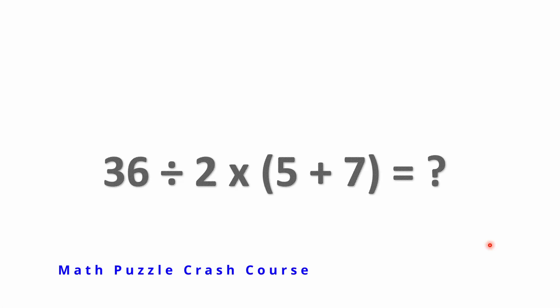Hello once again everybody. Welcome back to the Math Puzzle Crash Course. We have another simple math problem here with some mixed operations. We've got one here with some addition, multiplication, and division. The problem we've got here is 36 divided by 2 times the quantity 5 plus 7.